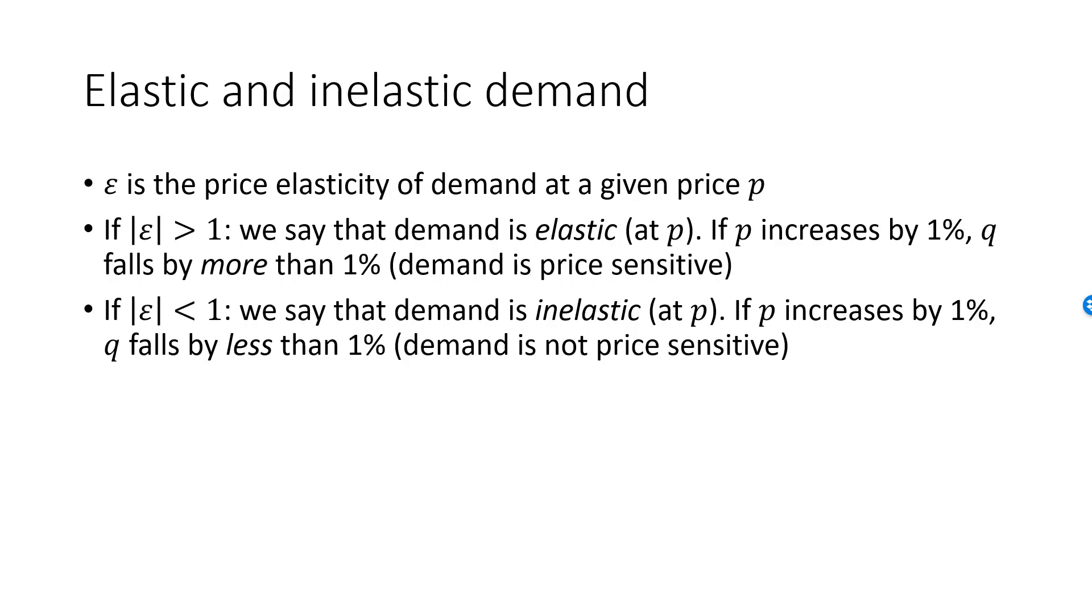Goods that are essential with no close substitutes tend to have an inelastic demand. Insulin is often given as an example of a good with a very inelastic demand. You should memorize which one is which, since these two concepts tend to come back over and over in microeconomics.